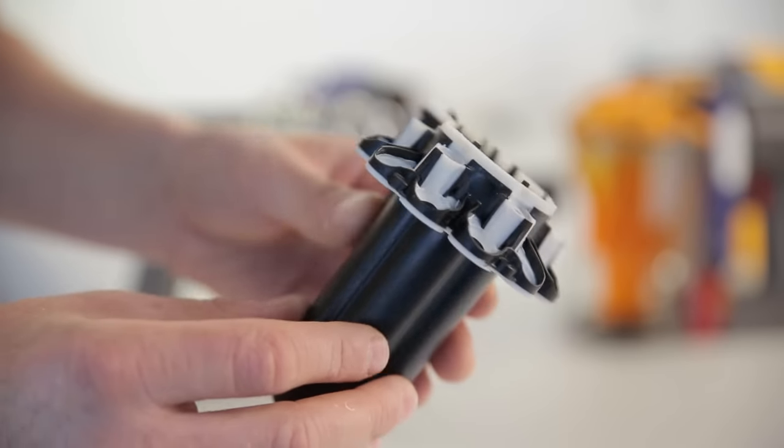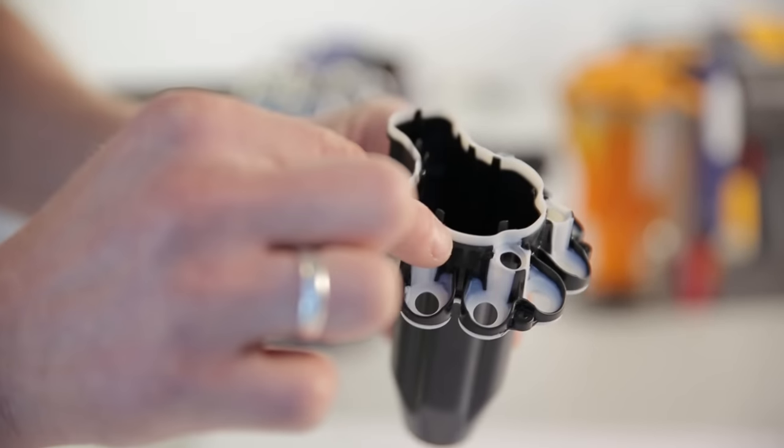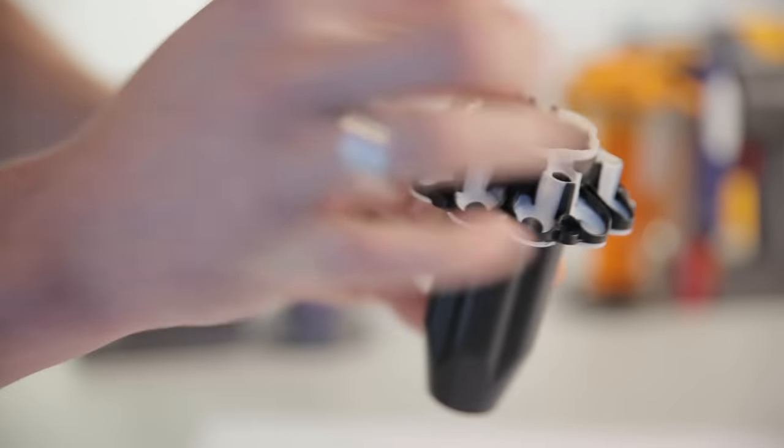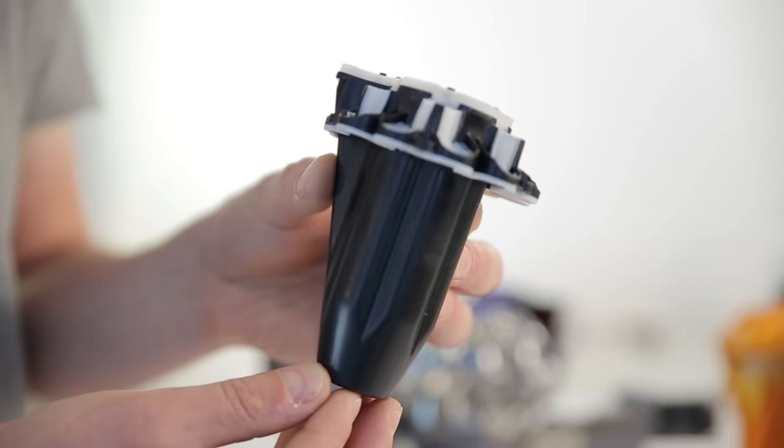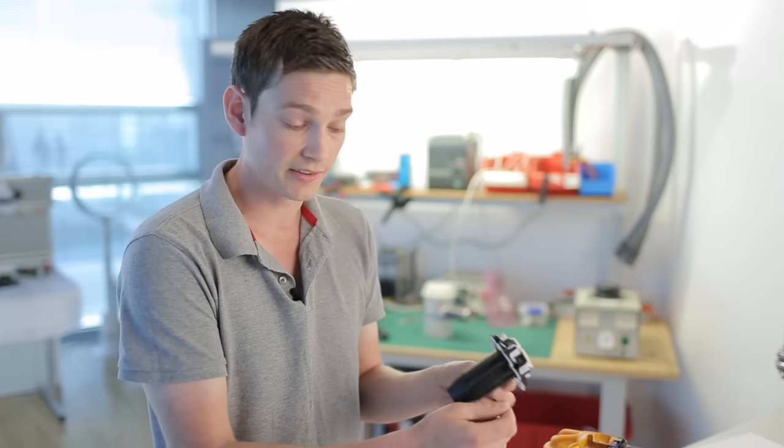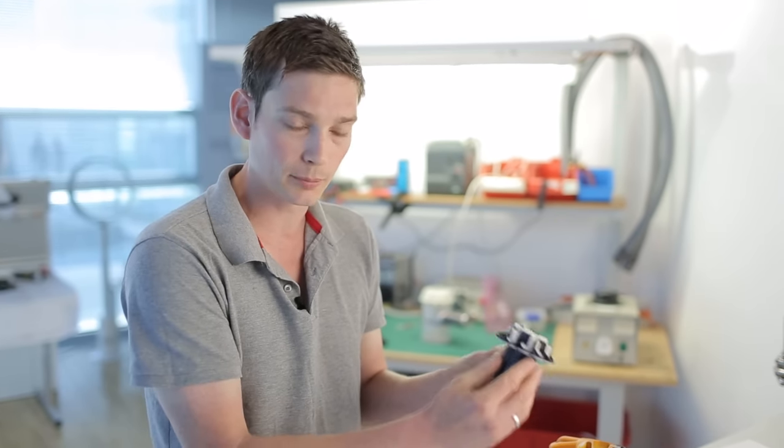We actually used an over-mold where we injection mold a rubber-like plastic onto an existing plastic part, and it then means it becomes one part which then inherently takes up a lot less space than having to fit these individual gaskets to this plastic part.